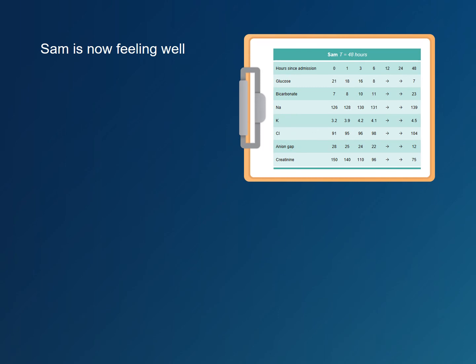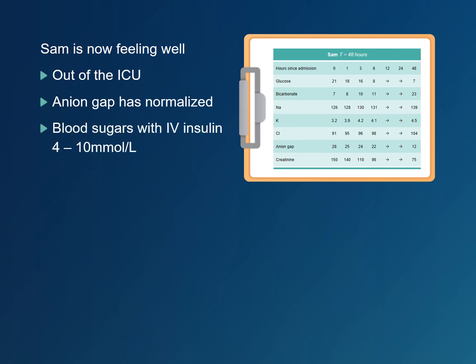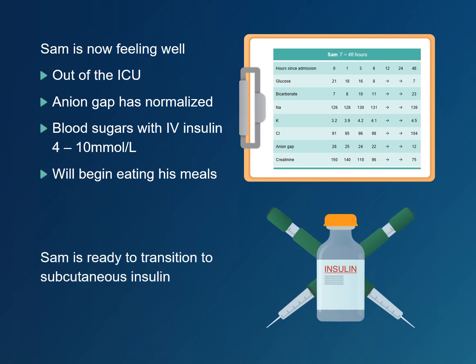Sam is feeling better. He is transferred out of the intensive care unit. His anion gap has normalized, his blood sugars have remained steady between 4 and 10 millimoles per liter, and he is about to begin eating. Sam is now ready to transition to subcutaneous insulin, and you can start planning his discharge.